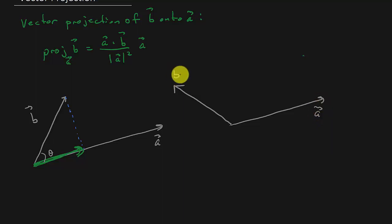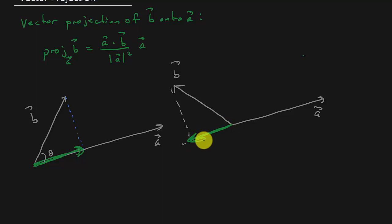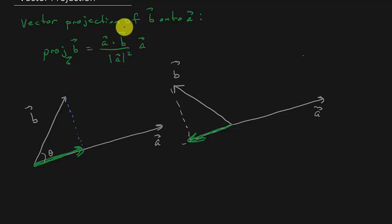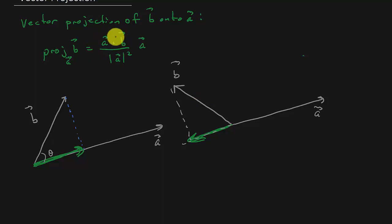If you had something like this — here's vector A, here's vector B — and the vector projection, if you came back this way and dropped it down, this would be your vector projection. The scalar in front of vector A for this case will be positive. For this other case over here, the scalar in front of vector A will be negative, because the angle between them is more than 90 degrees — think about what you learned with the dot product.